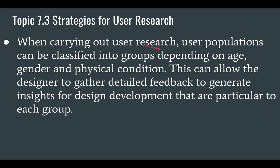When carrying out user research, user populations can be classified into groups depending on age, gender, or physical condition. This can allow the designer to gather detailed feedback to generate insights for design development that are particular to each group. When you are carrying out your user research, one of the first things you need to do is figure out who are your users — that's your user population. Try to classify them: are you making something specific to a certain age, a certain gender, or a certain physical condition? That's where you're going to try to get the detailed feedback.